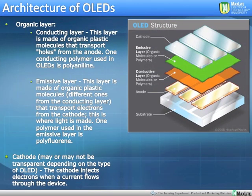In the organic layer, we have a conducting layer made of organic plastic molecules that transport holes from the anode. One conducting polymer used often in OLEDs is a polyionine. The emissive layer is made of organic plastic molecules different from the conducting layer — these transport the electrons from the cathode. This is where the light is made, where the photons are emitted from. The cathode may or may not be transparent, depending on the type of OLED. If you look at the drawing on the side, you can see the individual layers and how they're staggered. All of this comes out to maybe the thickness of about two hundredths of a human hair.